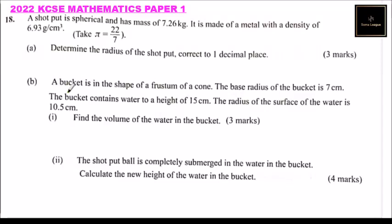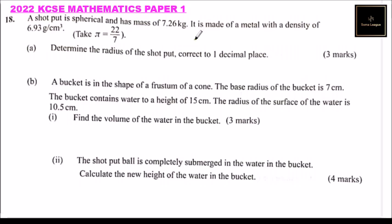This is question number 18, 2022 KCSC Mathematics Paper One. We are told the shot put is spherical and has a mass of 7.26 kg. It is made of metal with a density of 6.93 grams per centimeter cube. Take pi to be 22 over 7.